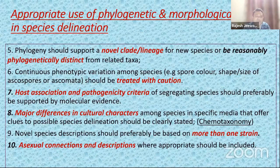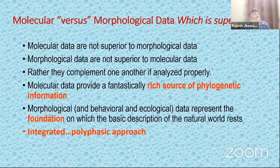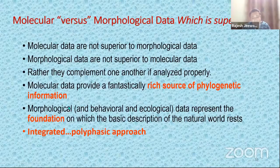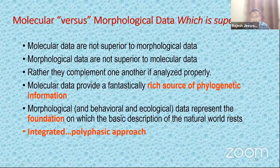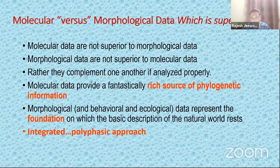Which one to use — morphological data or molecular data — which is superior? I would go for both of them. It's not that molecular data is superior to morphological data or vice versa. We can try to complement each other because molecular data is a rich source of phylogenetic information. But we should not overlook morphological data, because this is our foundation on which the whole description of the natural world rests. The best approach would be an integrated, polyphasic approach where you use morphology, molecular data, and even chemotaxonomy — that would be perfect.